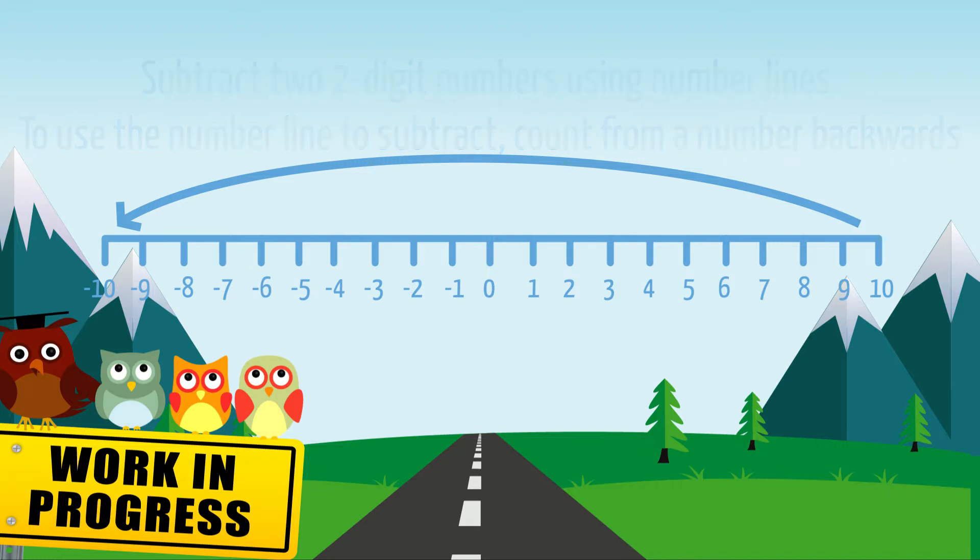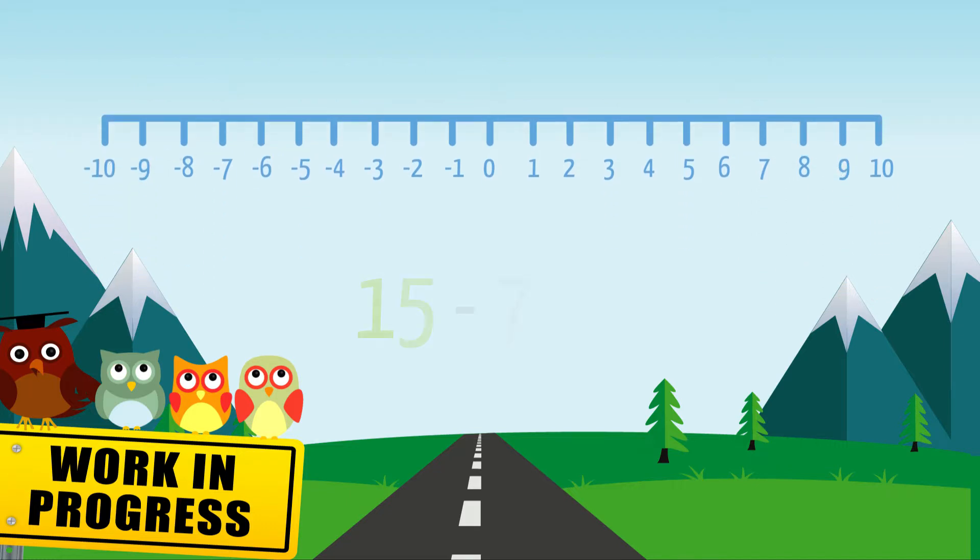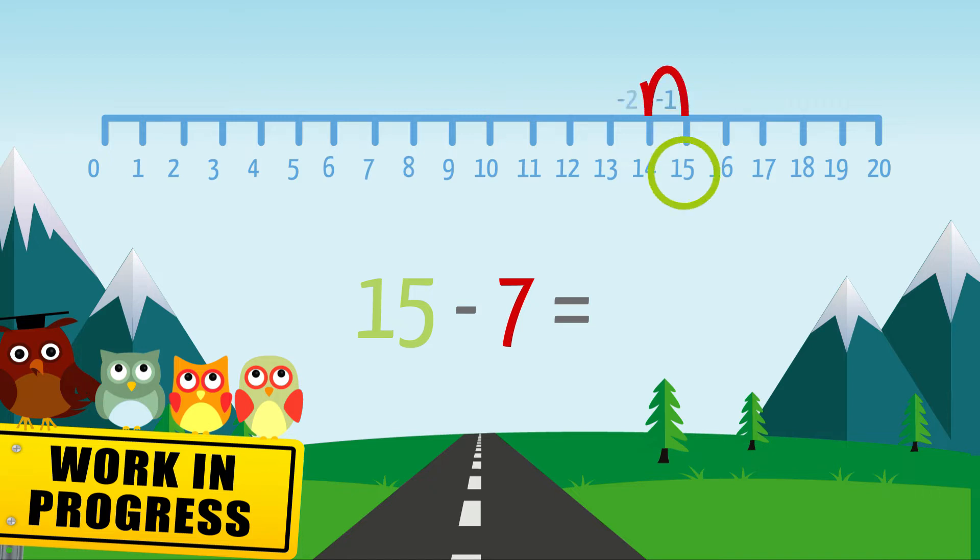Let's look at our first example, 15 minus 7. We can use the number line to count backwards. To solve our example, we will count backwards seven places from 15 until we get to 8. 15 minus 7 equals 8.